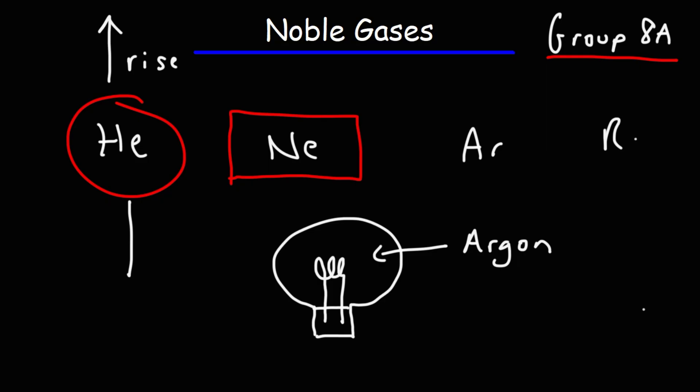The last one we need to talk about is radon. Radon is a radioactive noble gas. It is produced from nuclear decay of other radioactive elements like uranium. Now radon, it comes from the ground, and it can seep into your basement, into your houses, and it can accumulate over time.